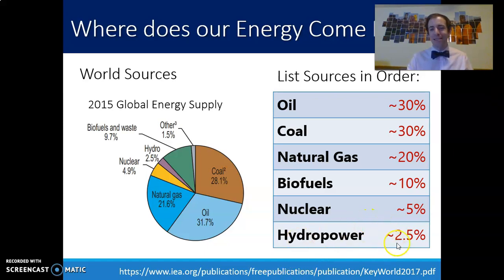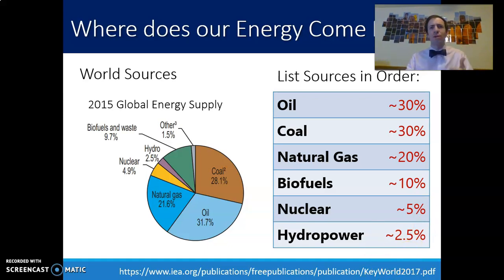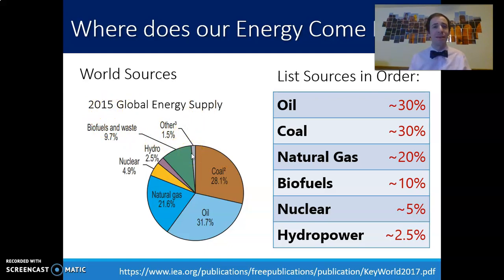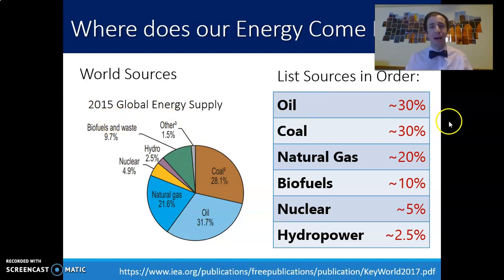Our next biggest, the sixth one, is hydropower. Notice in this list — something that might be surprising to you — is that even with all this talk about renewable energy, renewables don't break the top six. Hydropower certainly is a renewable source, but typically when we talk about solar and wind and all those other sources of energy, that all fits under the 'other' category in this pie chart. So one and a half percent, at least in 2015, came from solar, wind, and those sorts of things. It hasn't changed a whole lot since then, though it is changing, and we'll see some of those more recent graphs.